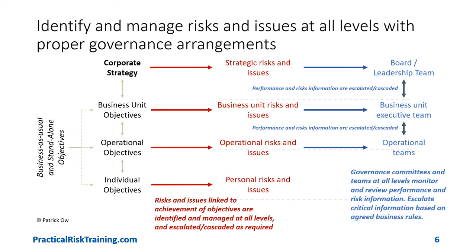Risks and issues linked to the achievement of objectives are identified and managed at all levels, and escalated or cascaded as required based on business rules. Strategic risks and issues are linked to the achievement of the corporate strategy — these are opportunities or threats to an organization's ability to set and execute its overall corporate strategy. Enterprise risk management effectively requires an organization to take an enterprise-wide view of risks and controls to determine whether the organization's residual risk profile is commensurate with its overall risk appetite and tolerance relative to the achievement of its strategic objectives. Linked to the achievement of business unit objectives are business unit risks and issues, and linked to the achievement of operational or project objectives are operational and project risks.